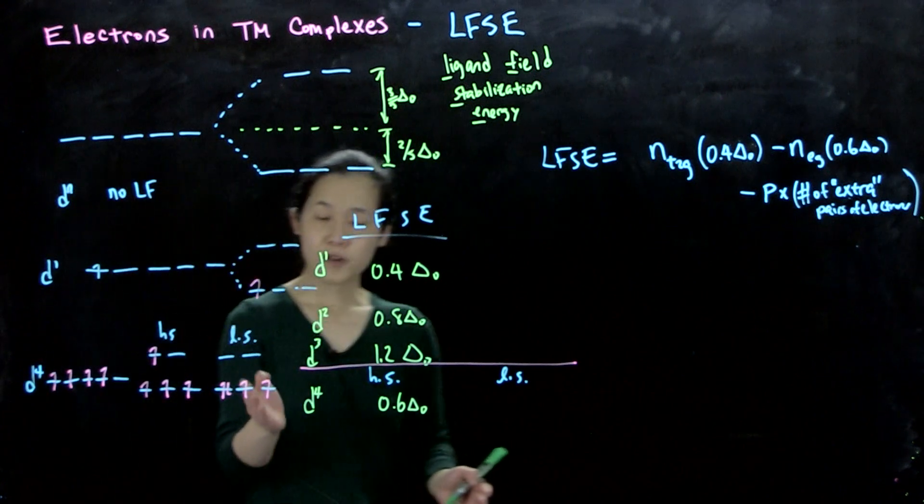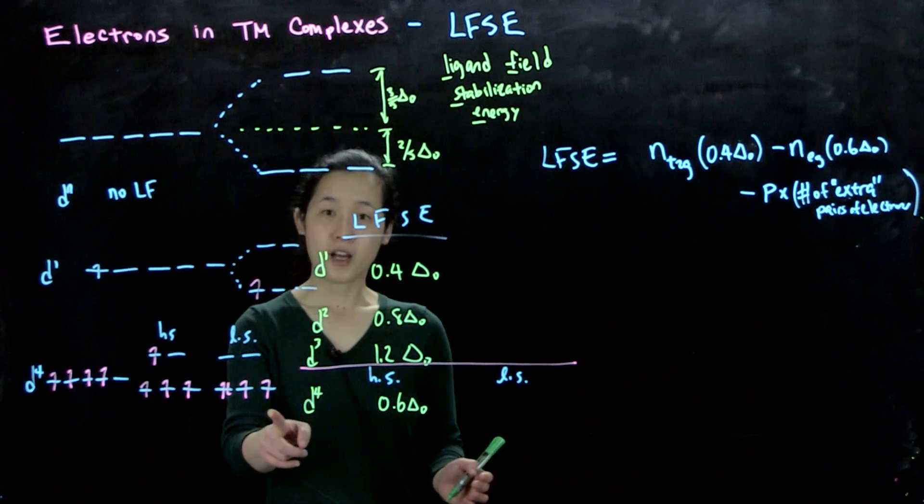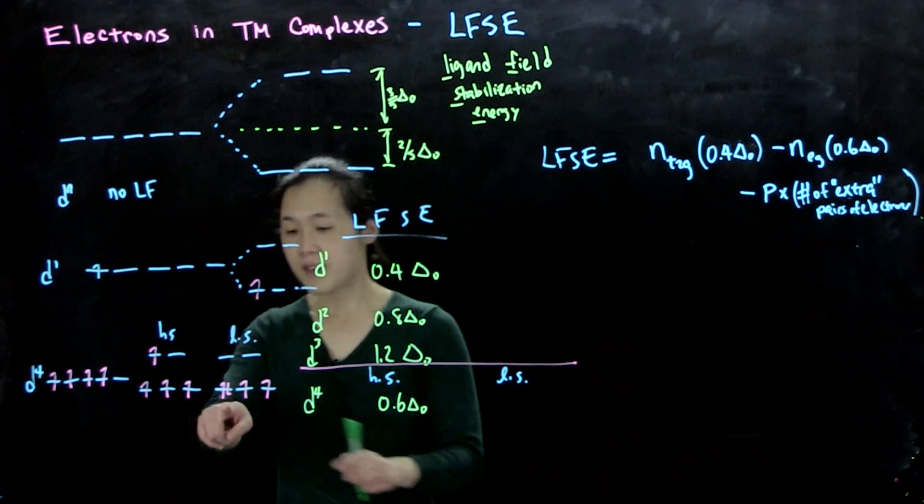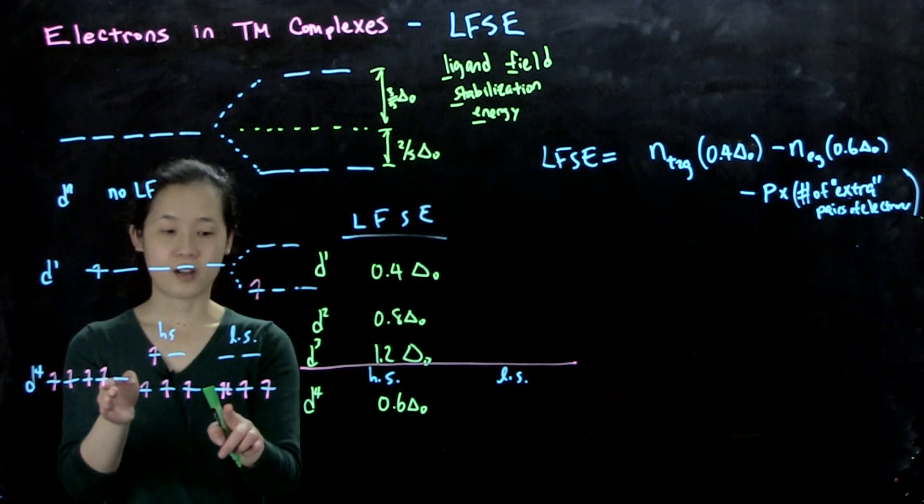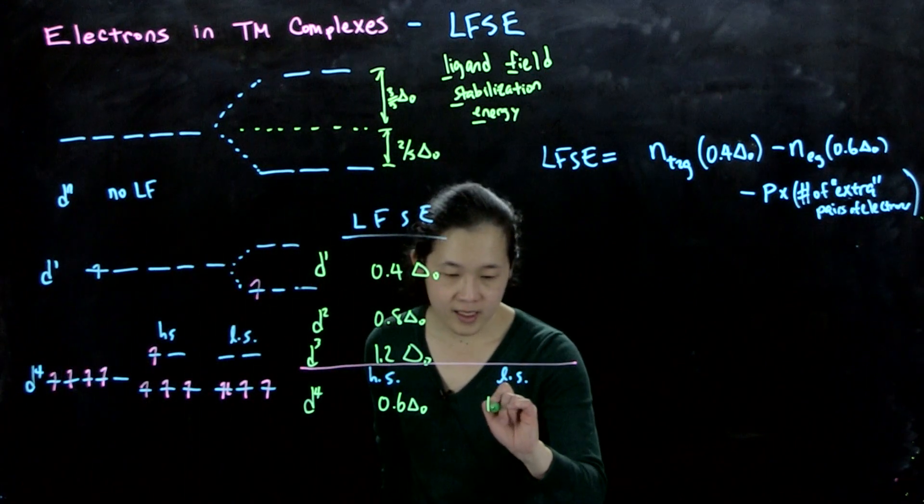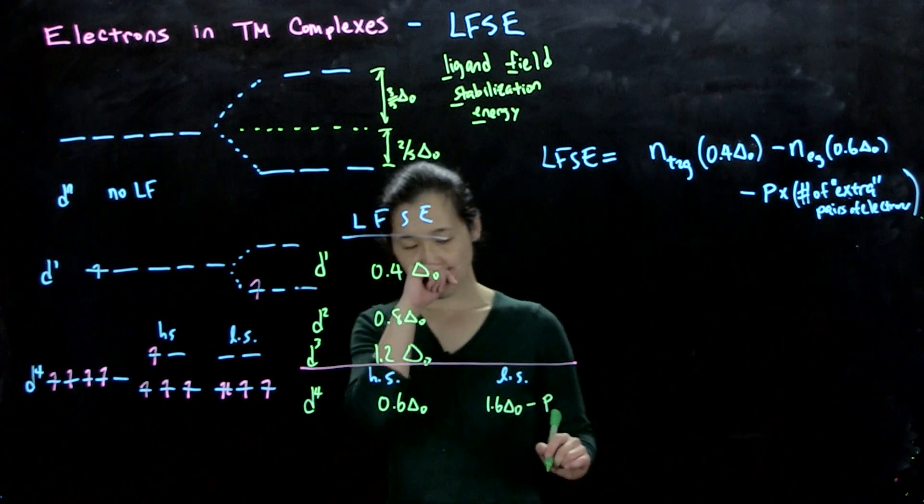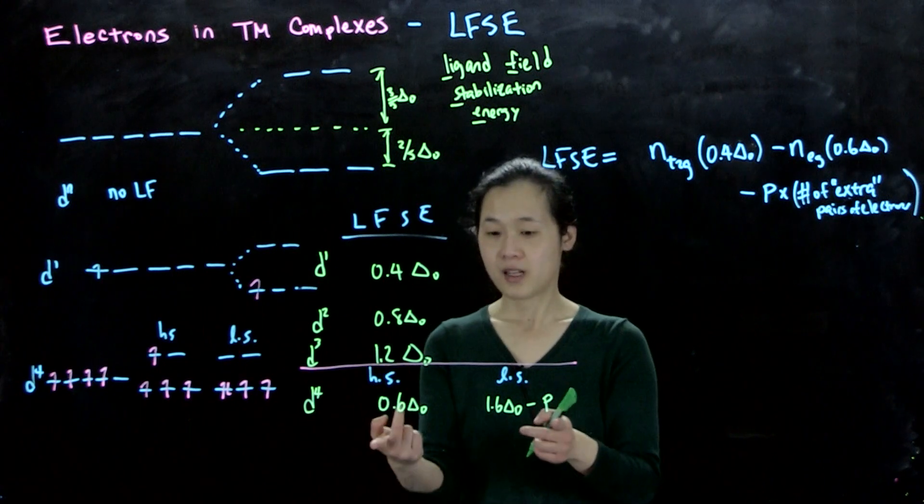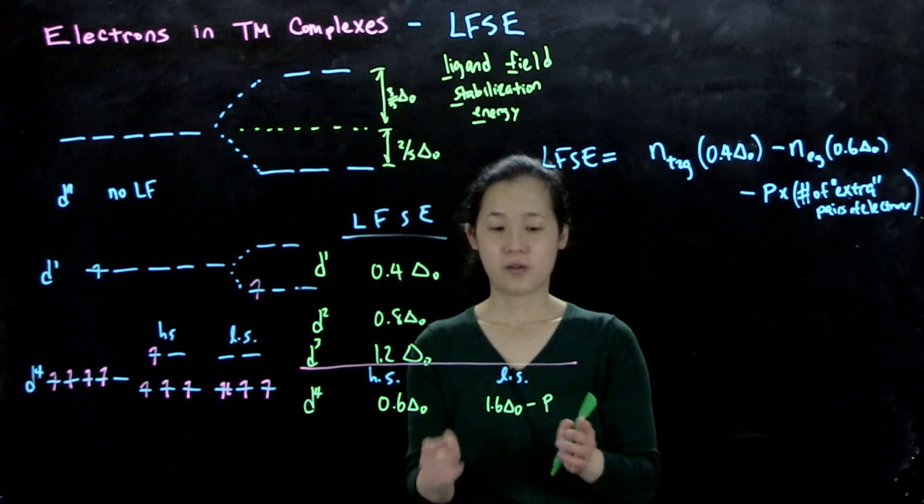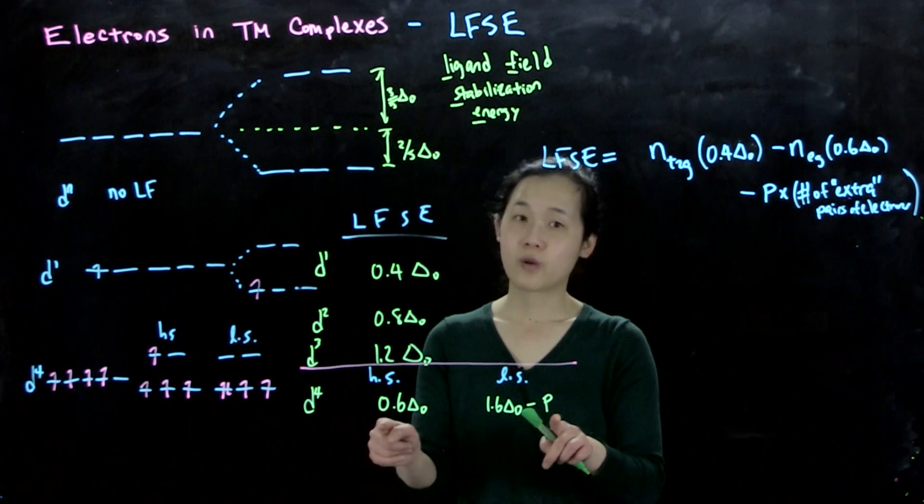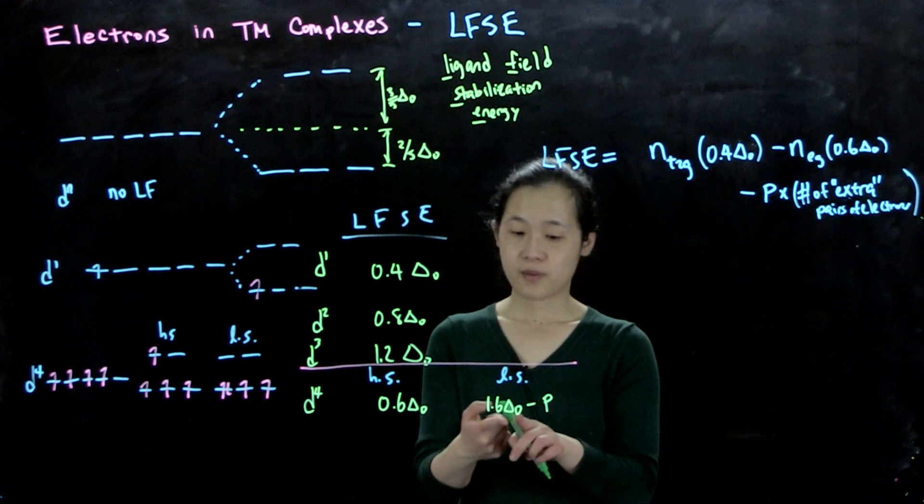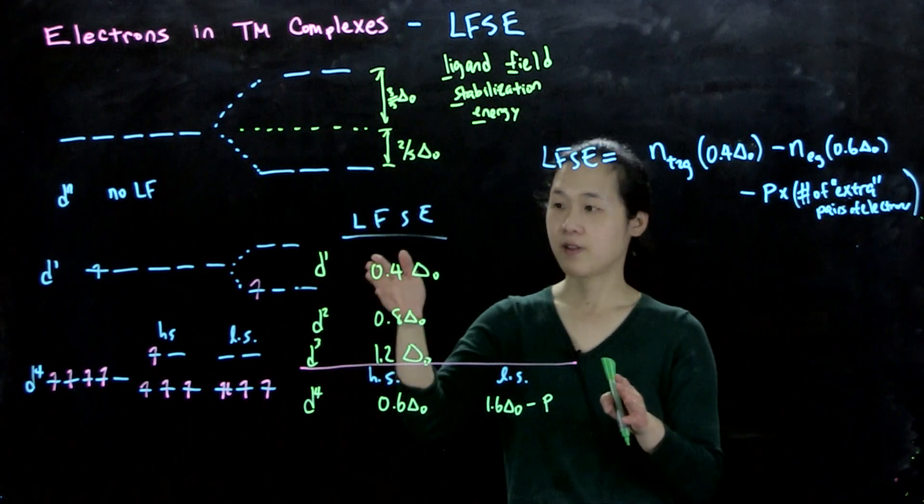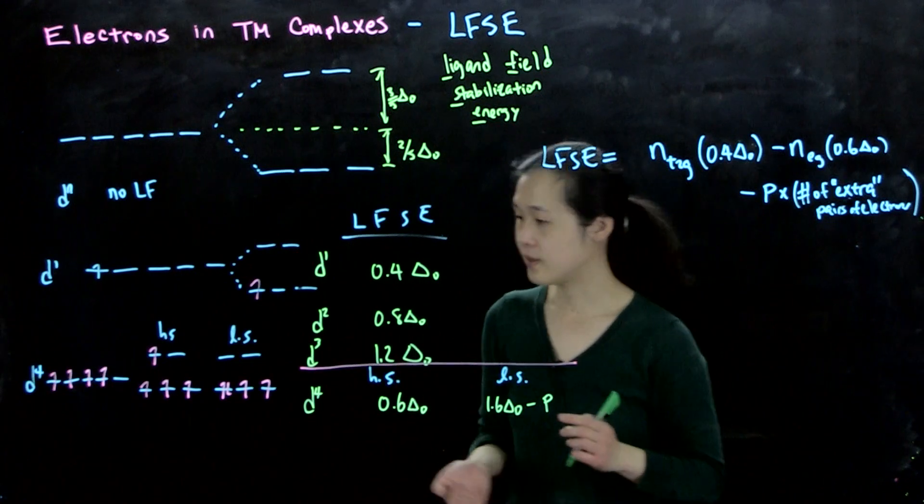In our low spin, we have 4 times 0.4 delta O, so 1.6 delta O. But then we're subtracting one pair. This is an extra pair because in our free ion configuration we have no paired electrons. So this would be 1.6 delta O minus P. For this number, if you want to know whether it's high spin or low spin, you need to know delta O and P. Then you should calculate which one is more stabilized, which one has the higher number. If P is very high, this number will be lower than the high spin number. But if P is very low and delta O is very big, then this number will be higher, so it will want to be low spin. For LFSE, for our convention, positive number is more stable.